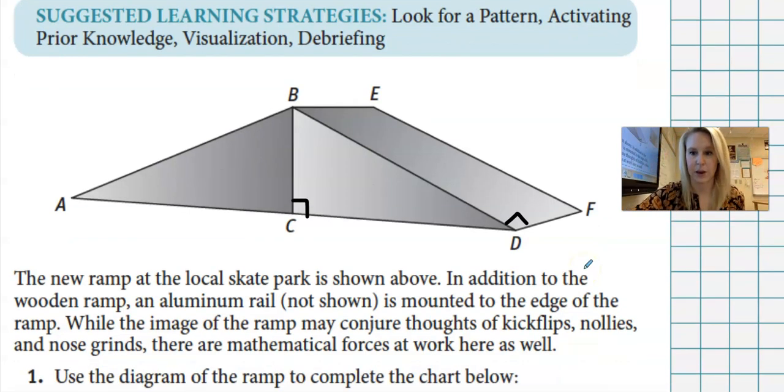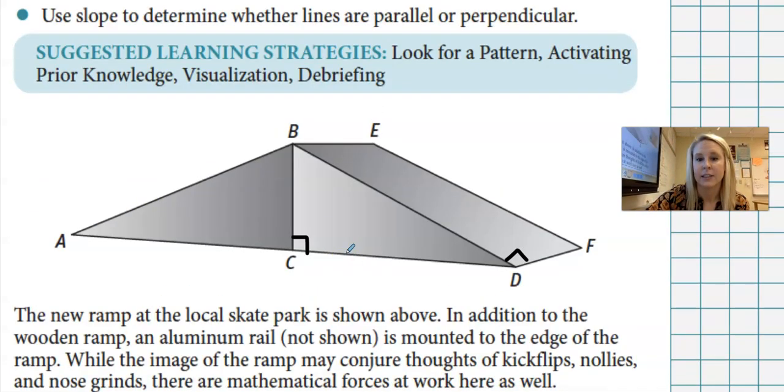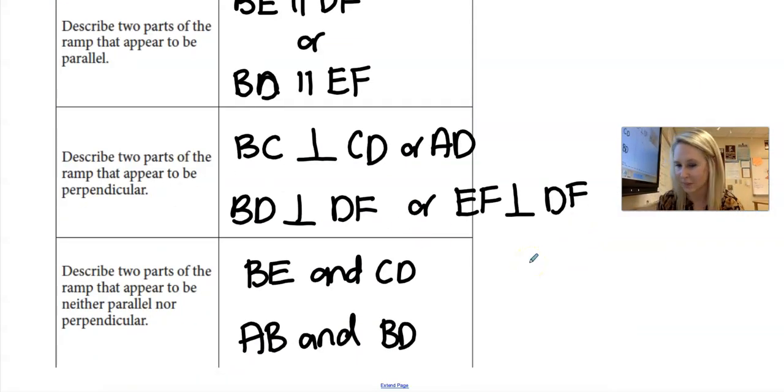I also said BD and EF or DF. So BD and EF, it may not look like it's a 90-degree angle, but I think it is if you were to look at it face on. Lines that don't appear to be either of the two, I said BE and CD. So BE is up here, CD is over here. Like they're never going to touch because they're in two different planes. That's an example. Or AB and BD. So again, probably different answers than what you had, or maybe you had the same and you felt like me. Alright. So moving on.